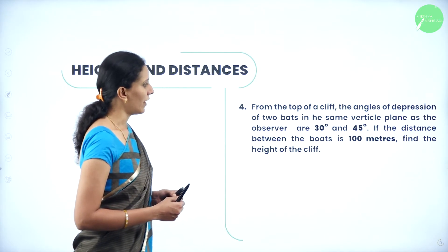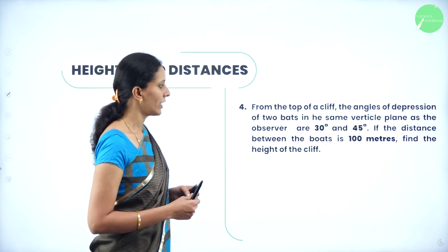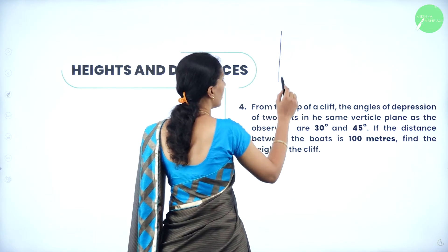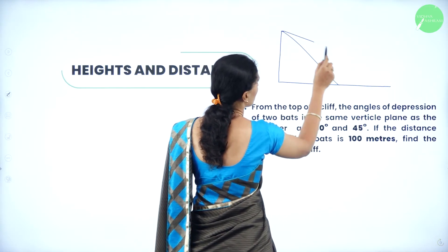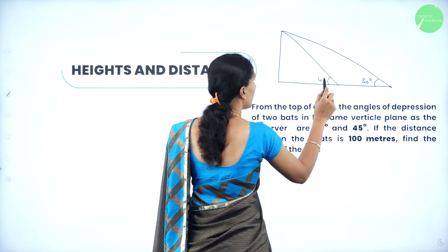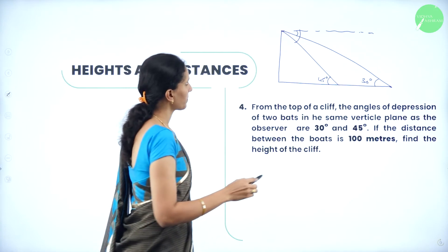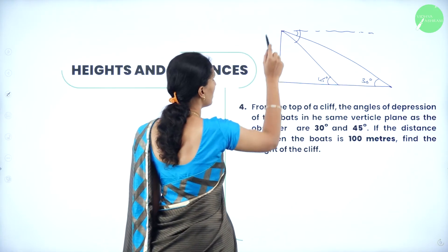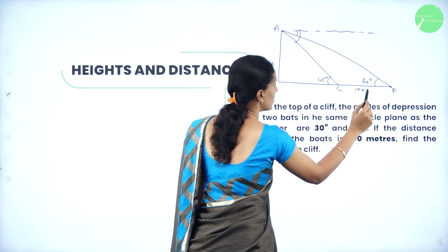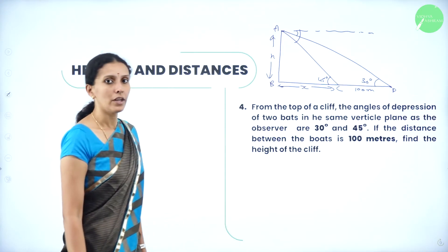Next question: from the top of a cliff, the angles of depression of two boats in the same vertical plane as the observer are 30 degrees and 45 degrees. If the distance between the boats is 100 meters, find the height of the cliff. Here is a cliff — we are observing two boats whose angles of depression are 30 degrees and 45 degrees. When converted into a right angle triangle you get 30 degrees and 45 degrees. Let me name the points A, B, C, D. The distance between the boats is 100 meters. Let the nearer distance be X and the height be H.